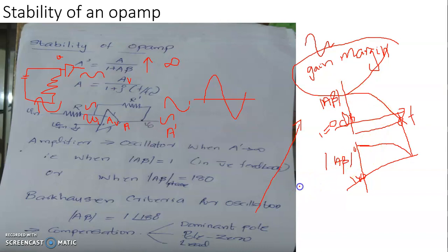Another parameter that can also be used to predict the stability of an amplifier is phase margin. Phase margin is the phase angle of A beta at a frequency at which the magnitude of A beta is 0 decibel, or it is one in fraction. This is the phase angle of A beta at that frequency.